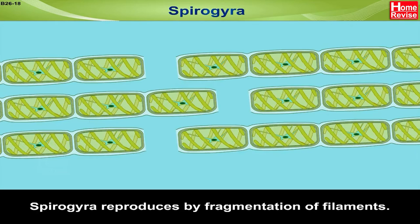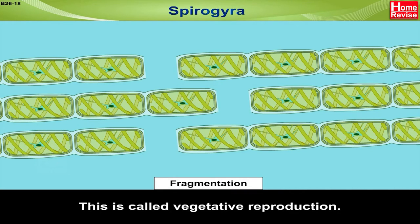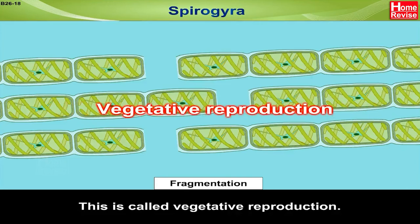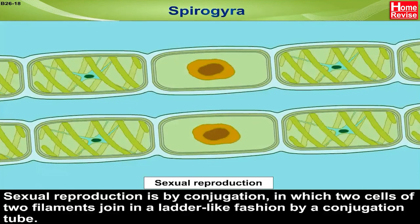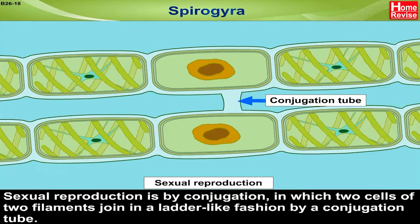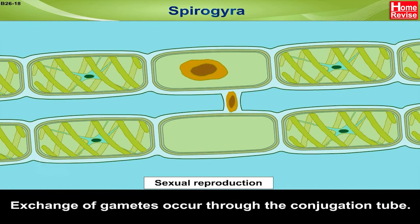Spirogyra reproduces by fragmentation of filaments, which is called vegetative reproduction. Sexual reproduction is by conjugation, in which two cells of two filaments join in a ladder-like fashion by a conjugation tube. Exchange of gametes occurs through the conjugation tube.